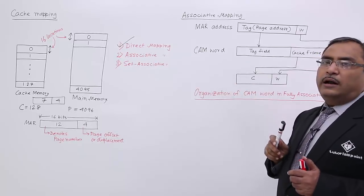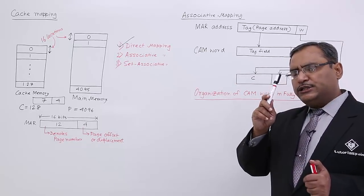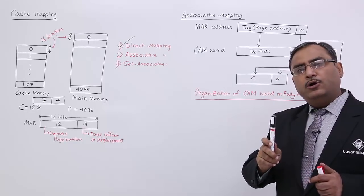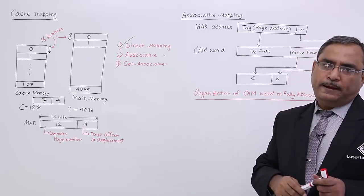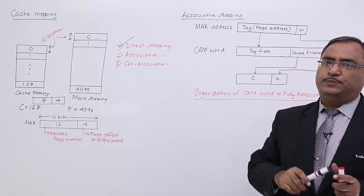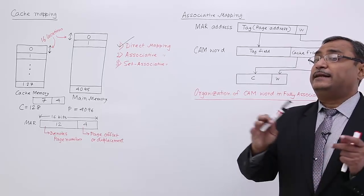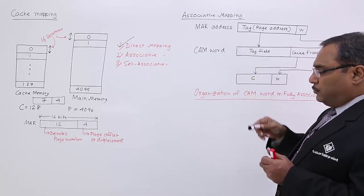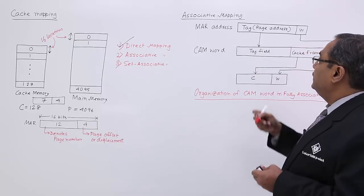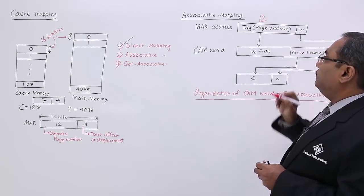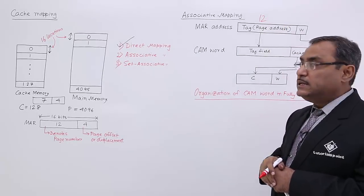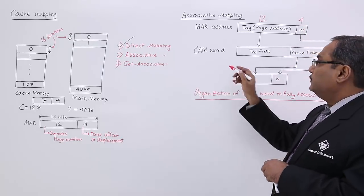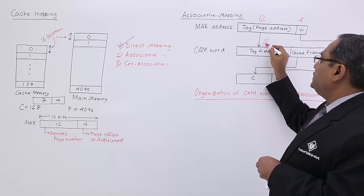Now, unlike direct mapping, here main memory any page can be loaded onto the cache memory any frame. That is the flexibility we are enjoying. So, we are having a 12-bit main memory page number and 4-bit main memory page offset. In CAM, this 12 bits will be searched.